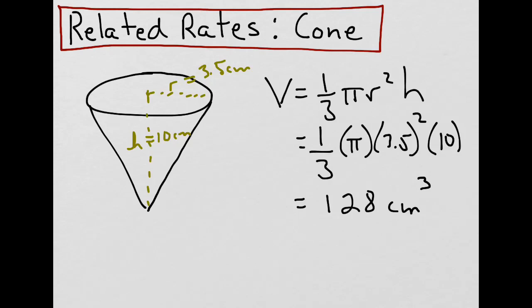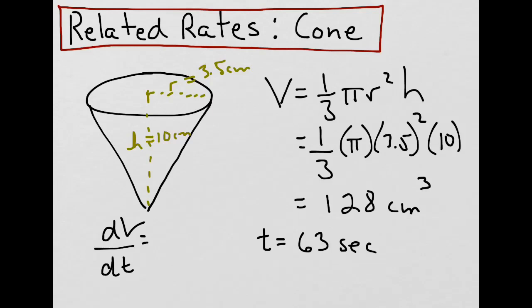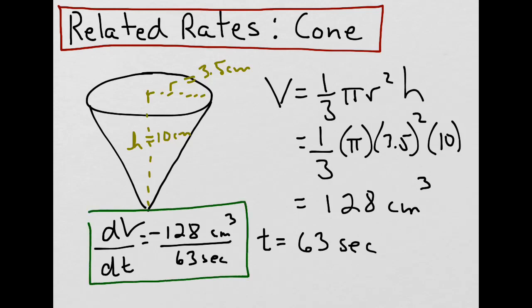And let's say we cut a little hole at the bottom of the cone and measure how long it takes for the water to drain out. And let's say that value was 63 seconds. That tells us that the change in volume with respect to time is equal to 128 cm³ divided by 63 seconds. And because the water is draining out, that becomes a negative value. This value represents the rate at which water is draining from the cone.